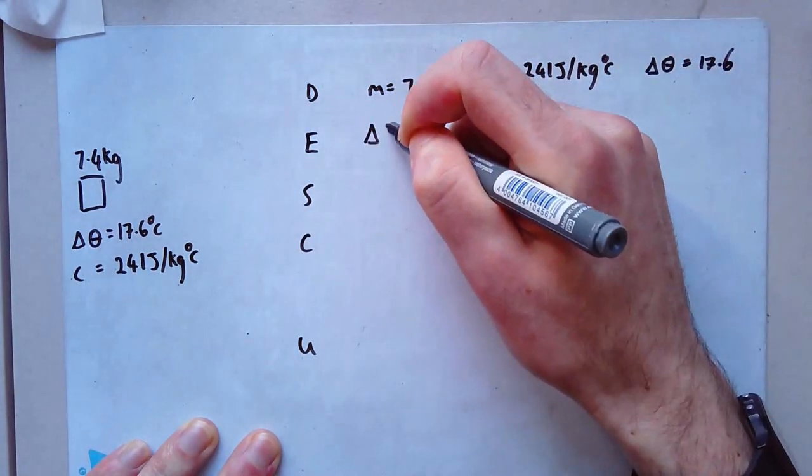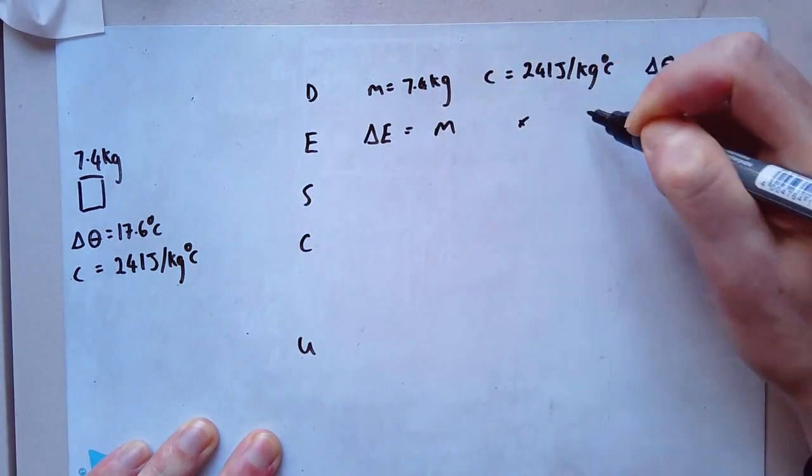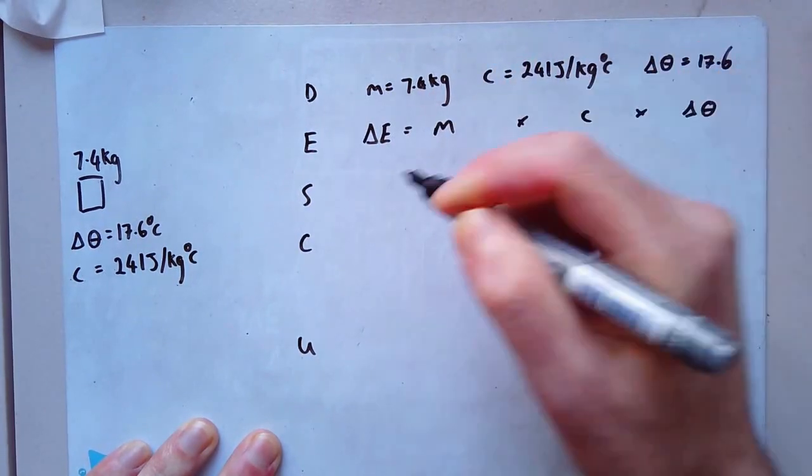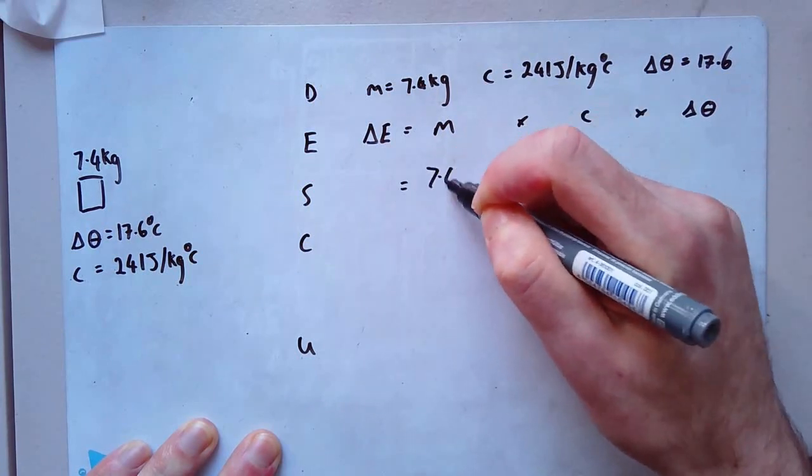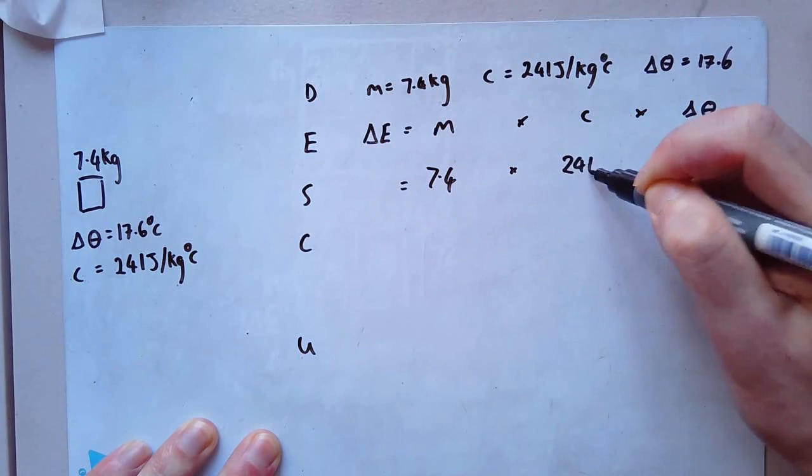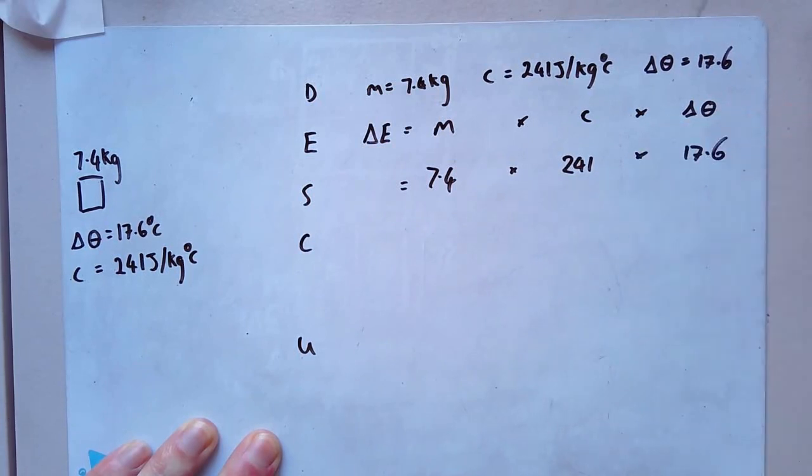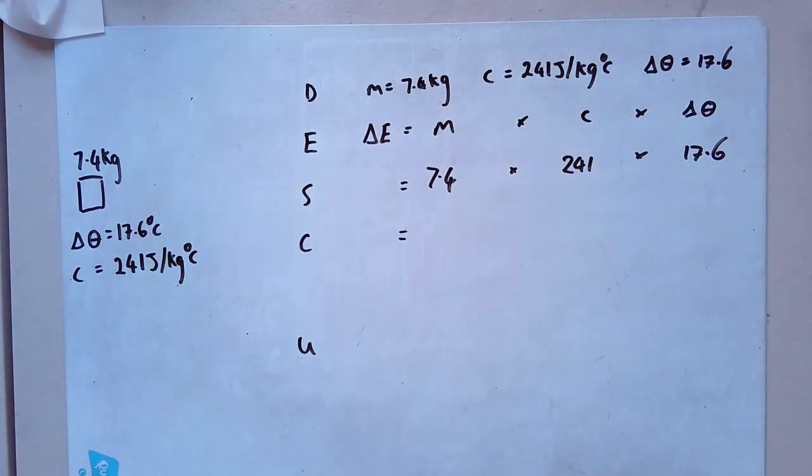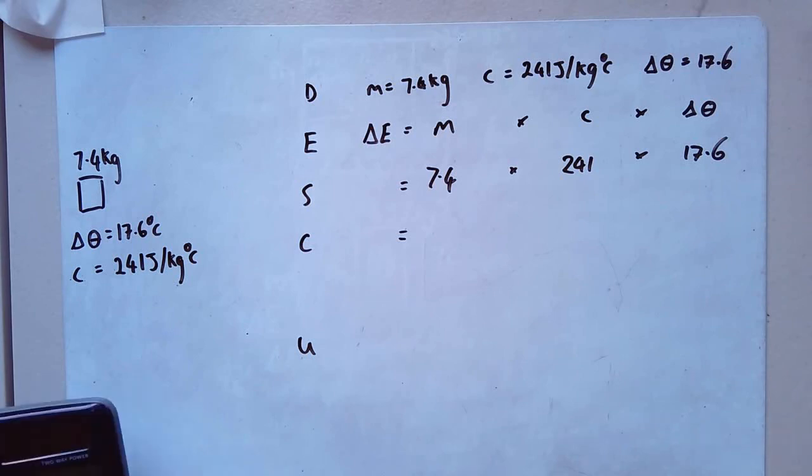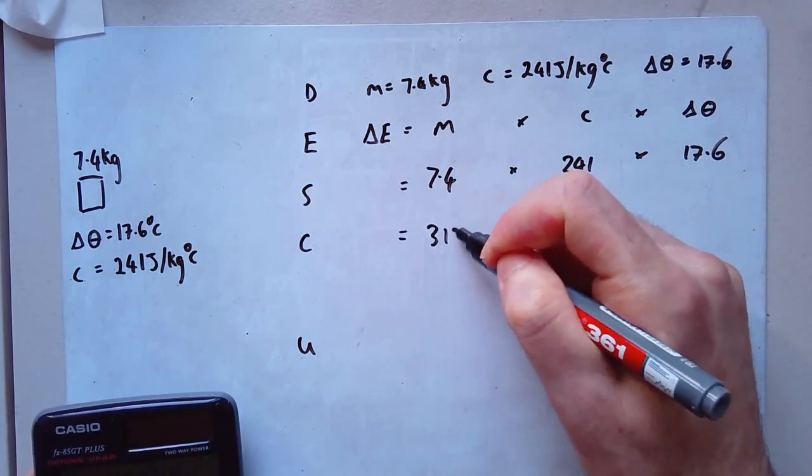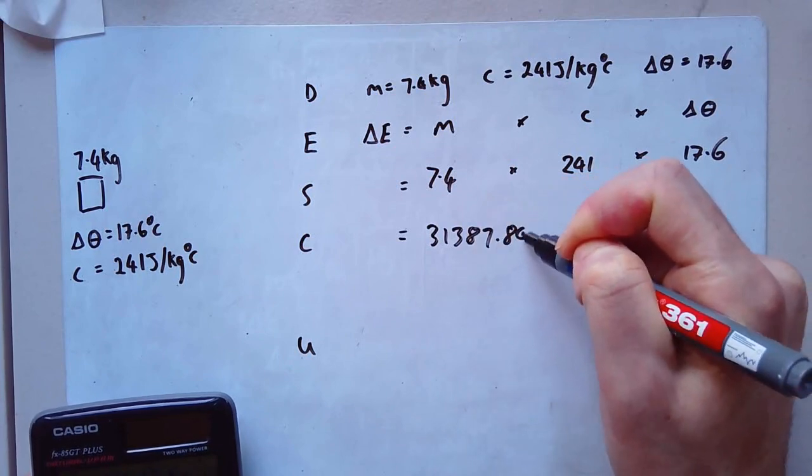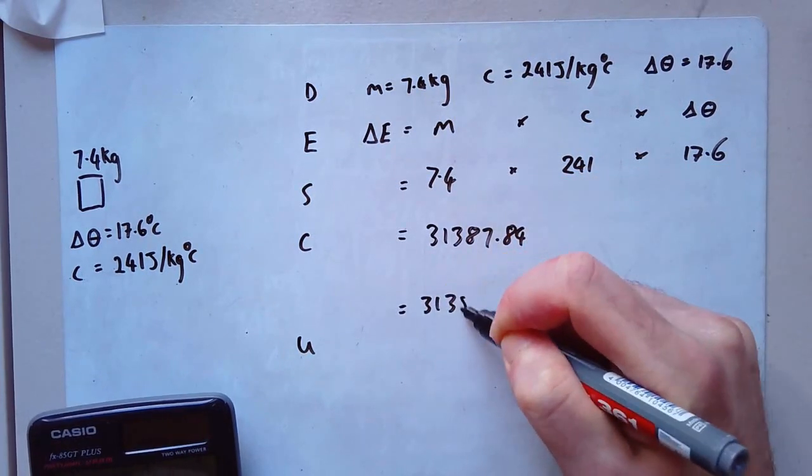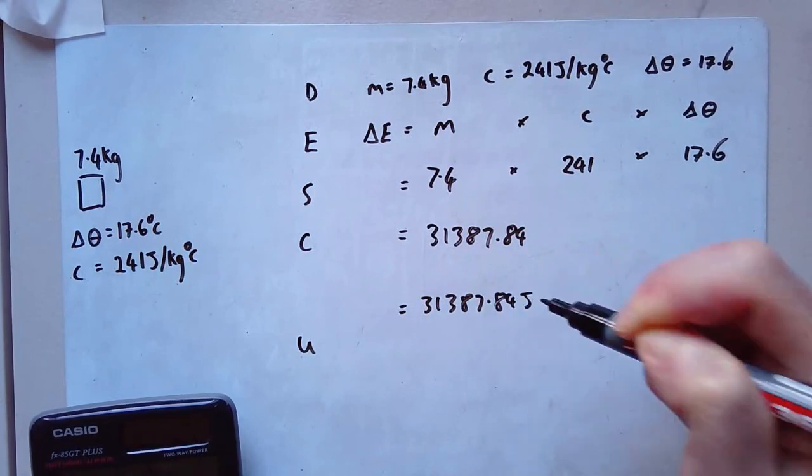Equation delta E equals M times C times delta theta. Which in this case, substitute gives me 7.4 times by 241 times by 17.6. Calculate all that together. 7.4 times 241 times 17.6. That gives me 31387.84. And my unit 31387.84 joules done. Fairly straightforward.